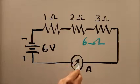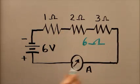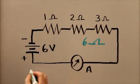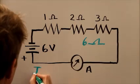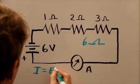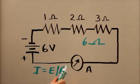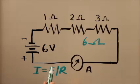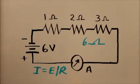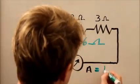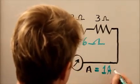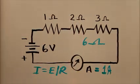So the current flowing through this circuit: I equals E over R, according to Ohm's Law. Current in amperes equals voltage in volts divided by resistance in ohms. In this case, the voltage is 6 and the resistance is 6, so this is going to show a current of 1 ampere.